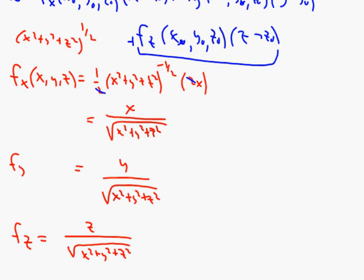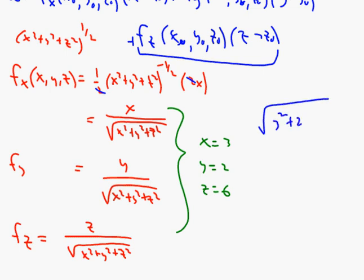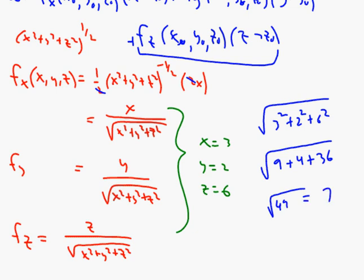We evaluate everything at x equals 3, y equals 2, z equals 6. The common denominator is the square root of 3 squared plus 2 squared plus 6 squared, which is the square root of 9 plus 4 plus 36, equaling the square root of 49, or just 7. So f sub x equals 3 sevenths, f sub y equals 2 sevenths, and f sub z equals 6 sevenths.